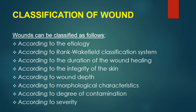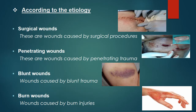Wounds can be classified as follows: according to the etiology, according to the Rankwakefield classification system, according to the duration of wound healing, according to the integrity of the skin, according to the depth of wound, according to morphological characteristics, according to degree of contamination, and according to severity of injury.